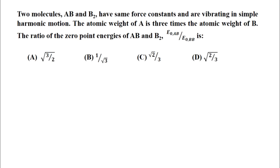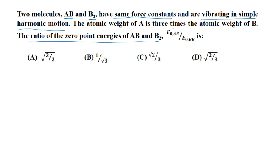The second question: we have two molecules — a heteronuclear diatomic AB and a homonuclear diatomic B₂ — with the same force constants and vibrating in simple harmonic motion. The atomic weight of A is 3 times that of B. We have to find the ratio of the zero point energies E₀(AB) / E₀(B₂).